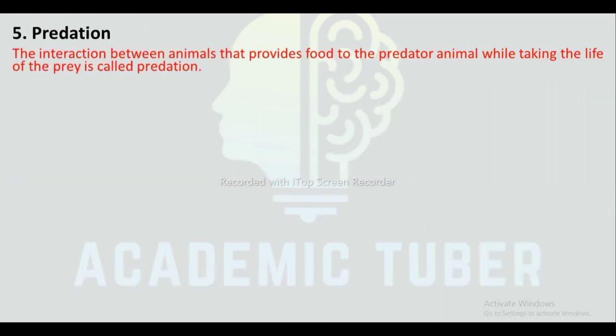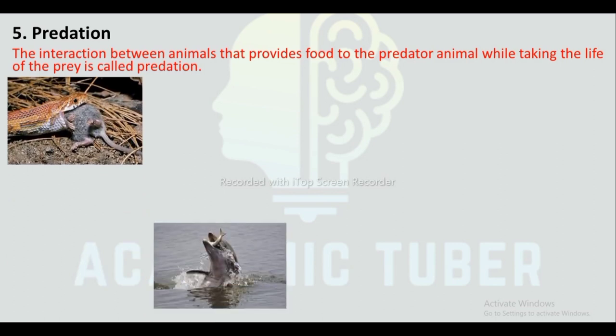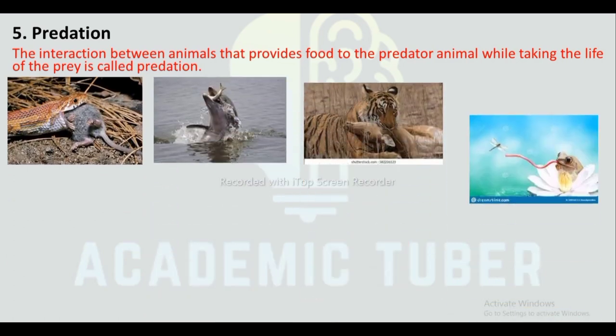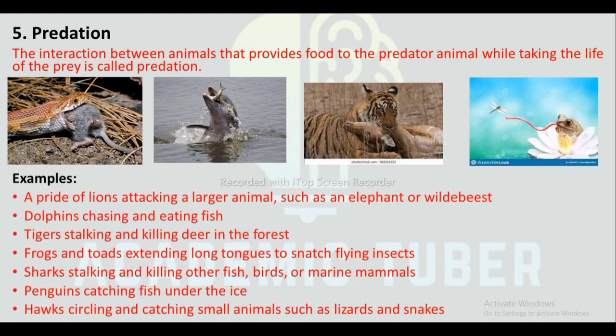Predation: The interaction between animals where one provides food to the predator while losing its life is called predation. Examples include: a pride of lions attacking a larger animal such as an elephant or wildebeest; dolphins chasing and eating fish; a tiger stalking and killing deer in the forest; frogs and toads extending long tongues to snatch flying insects; sharks stalking and killing other fish; hawks circling and catching small animals such as lizards and insects.